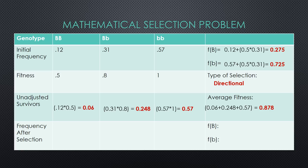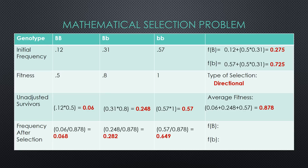Now that we have calculated the average fitness, we can find the frequency after selection by dividing the unadjusted survivors in each column by the average fitness. The final step is to find the new allelic frequencies using the same calculations as before but with the new genotypic frequencies. You can now see that the white rabbits were selected for because the little b little b genotypic frequency increased and the little b allelic frequency also increased, which is directional selection.